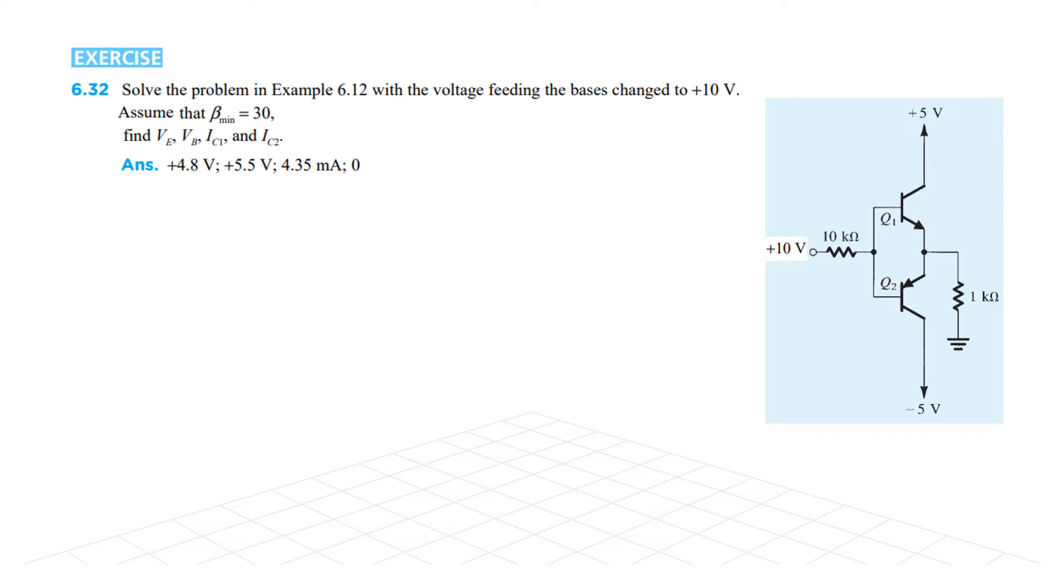Now since this is 10 volts, we have already discussed earlier that positive voltage here will make Q2 off. So Q1 is conducting, and so we draw the circuit separately here as we have done in the previous example as well.